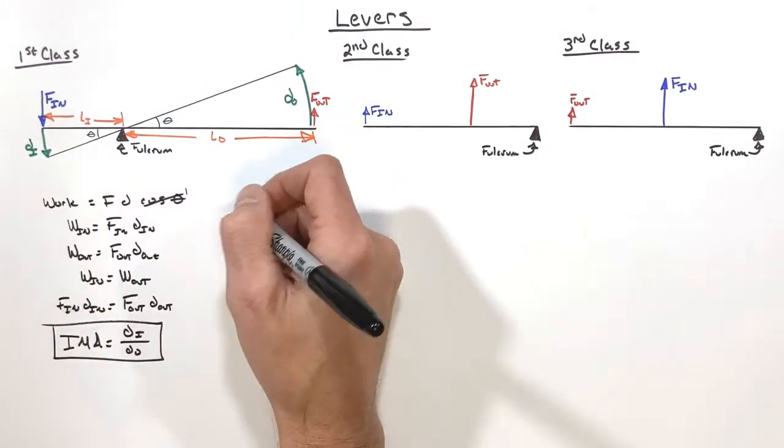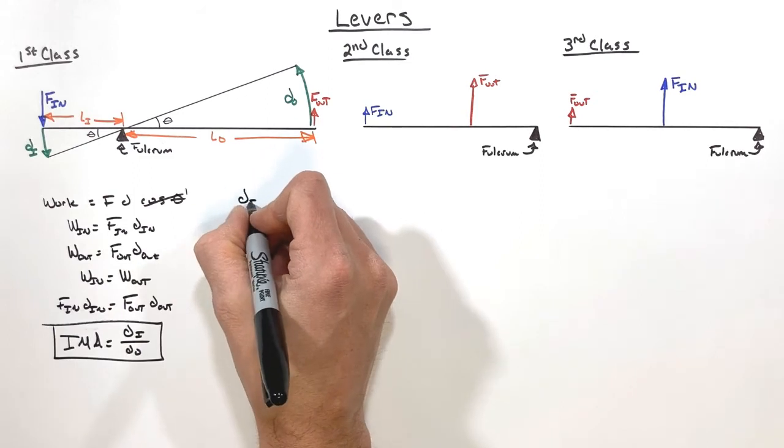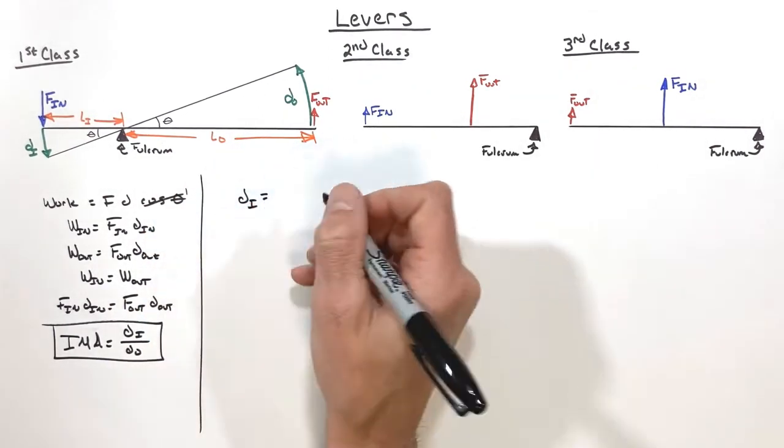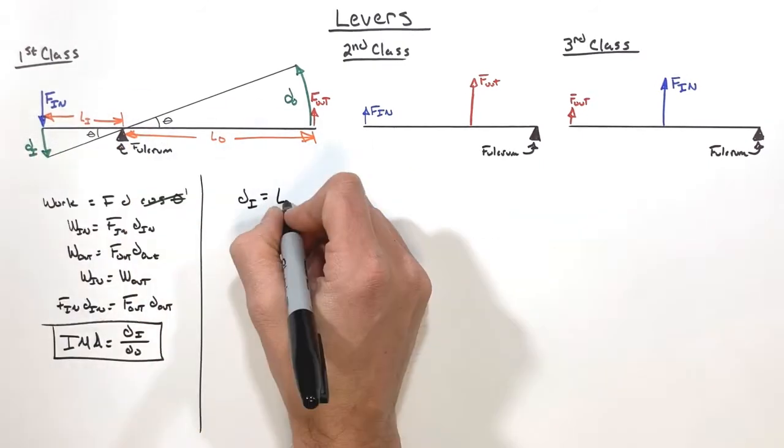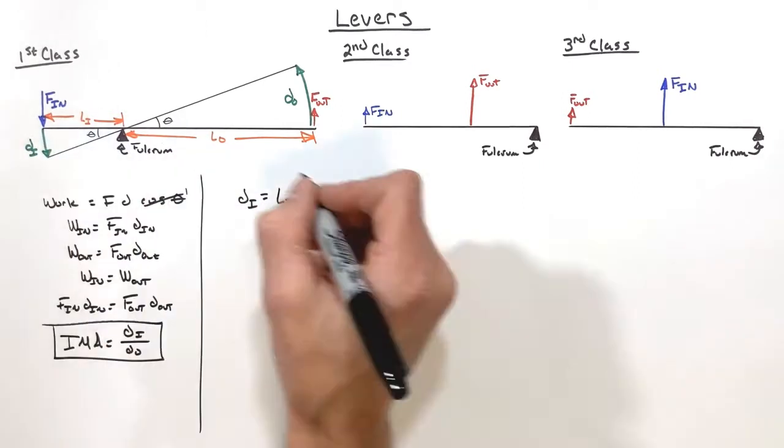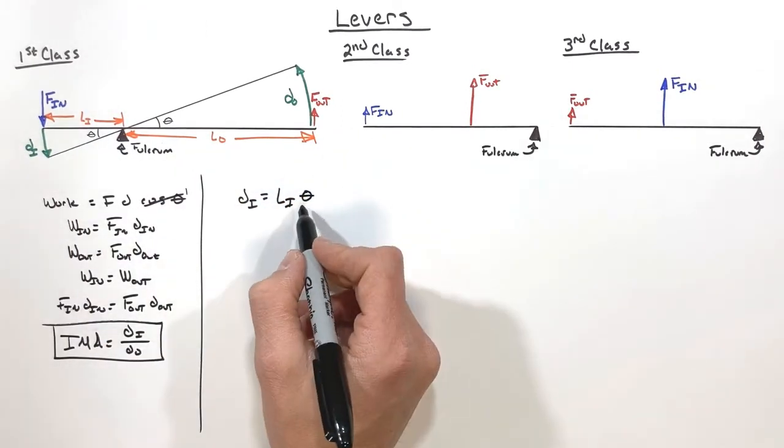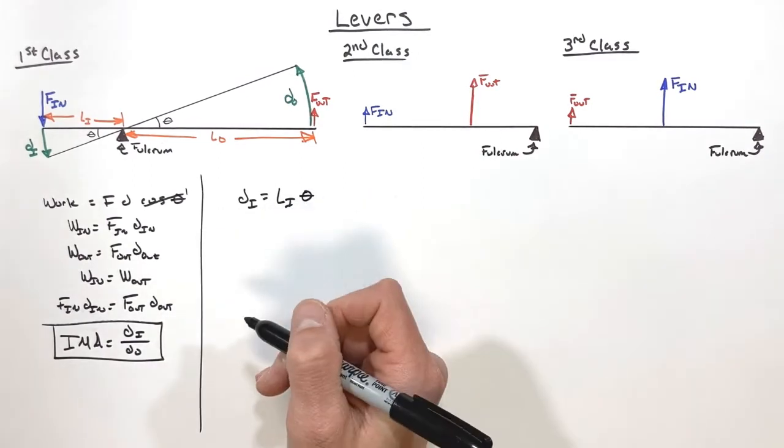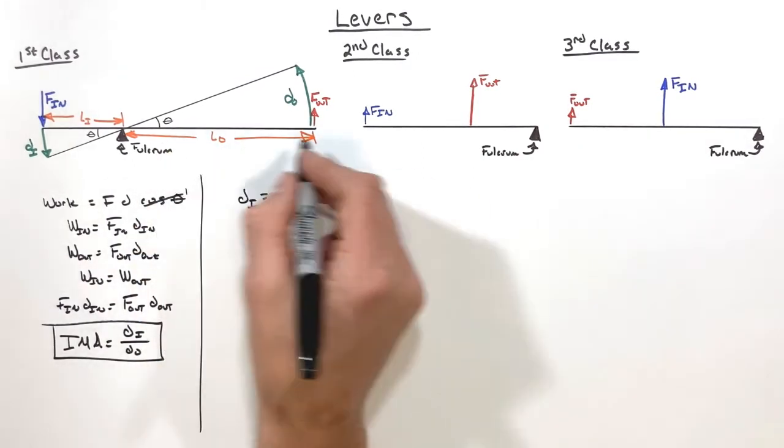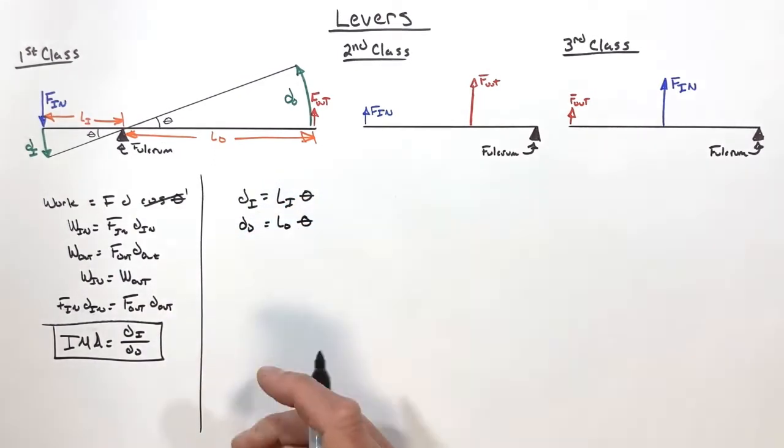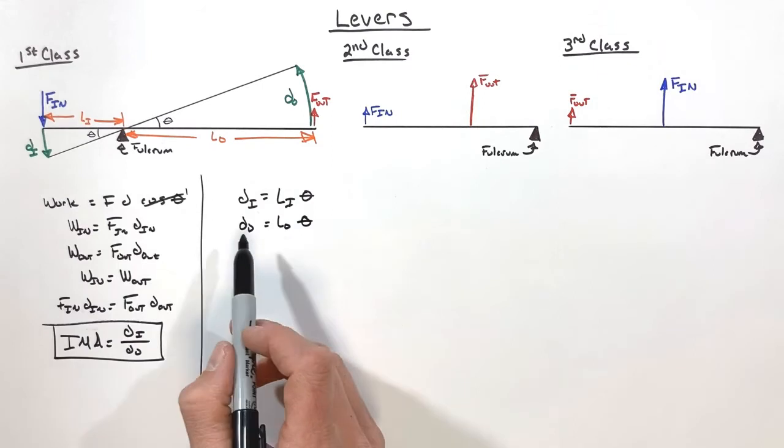Looking over here, we know the displacement in is going to be equal to the length of the input lever on the input side multiplied by the angle theta. And you're looking at this going, 'Oh, that seems fishy.' As long as this angle's in radians, this works out. And we see a similar thing on the output side: d_out equals L_out times theta.